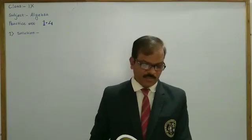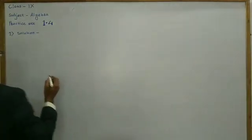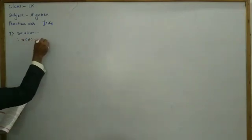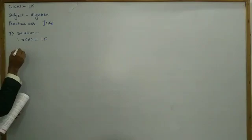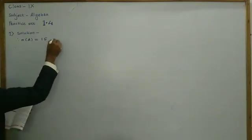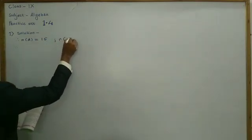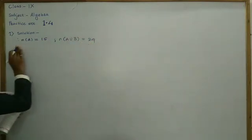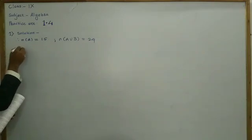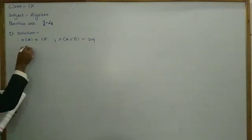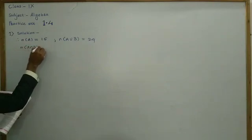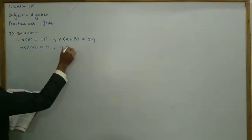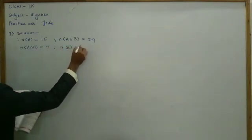If n(A) is equal to 15, n(A∪B) is equal to 29, and n(A∩B) is equal to 7, find n(B) — the number of elements in B.